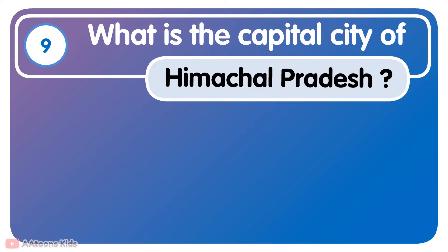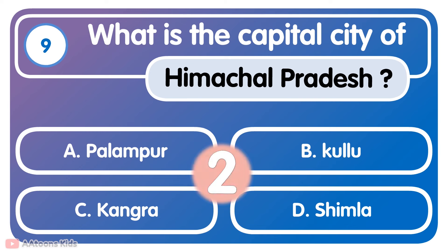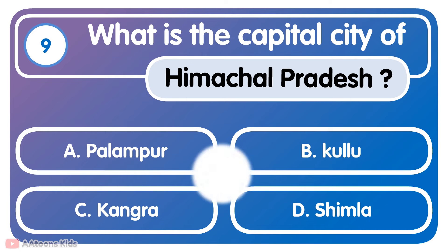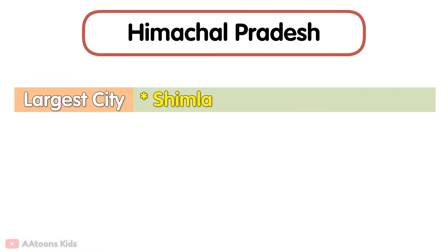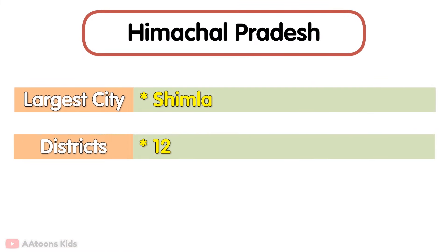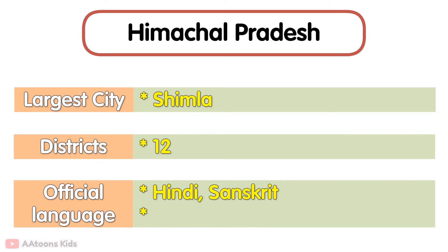What is the capital city of Himachal Pradesh? Shimla. The largest city in Himachal Pradesh is Shimla. It has 12 districts. Its official languages are Hindi and Sanskrit. Shimla's beautiful natural landscape attracts tourists from around the world.